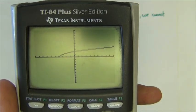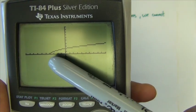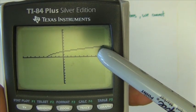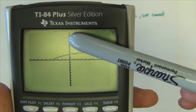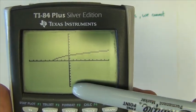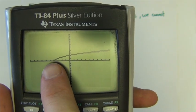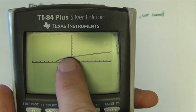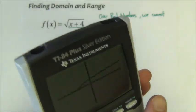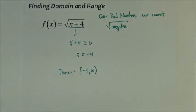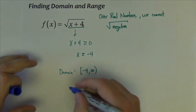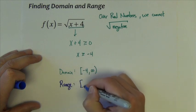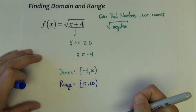And sure enough, we can verify from our graph that it starts at negative four on the x and it goes bigger than negative four. Now let's use the picture to determine the range, the y values. We can see that the smallest y value right here is at zero. And then the graph starts to go up from there. So that's going to be our range. Our range is zero to infinity.